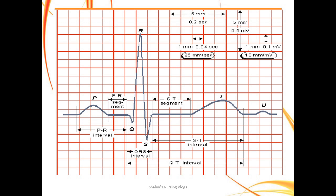Now let's look at the specifics of an ECG strip. The vertical axis is measured in millivolts and the horizontal axis in seconds. Each small box vertically is 0.1 millivolts, and one large box (5 small boxes) equals 0.5 millivolts. Horizontally, each small box is 0.04 seconds, so five small boxes equal 0.2 seconds.